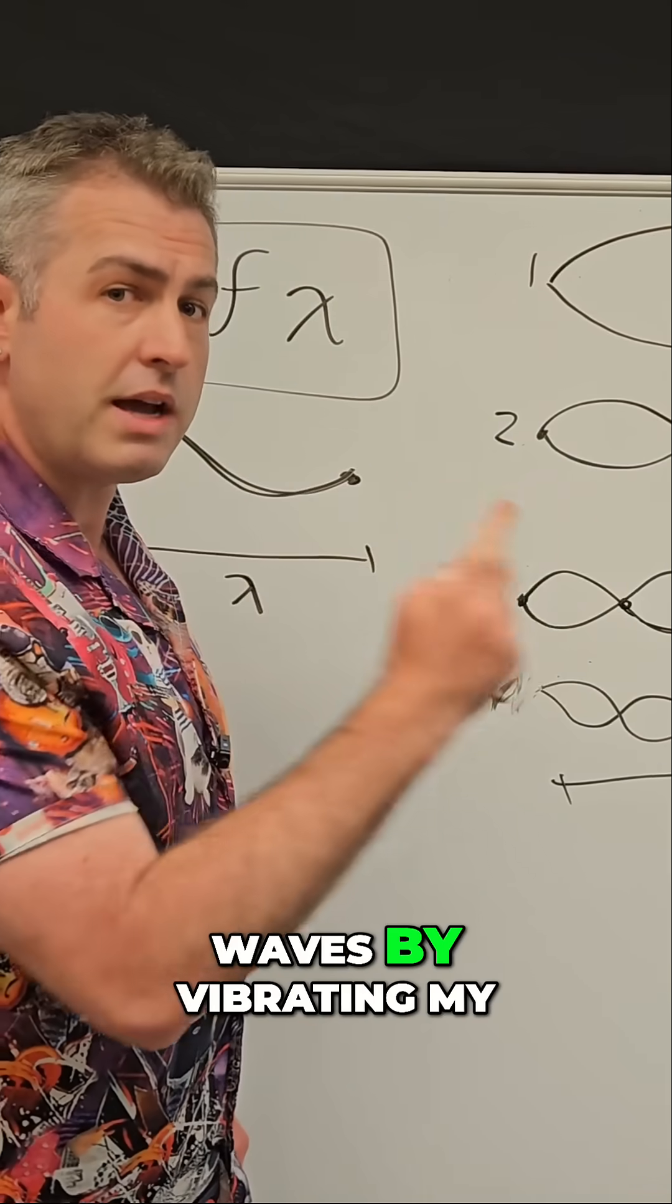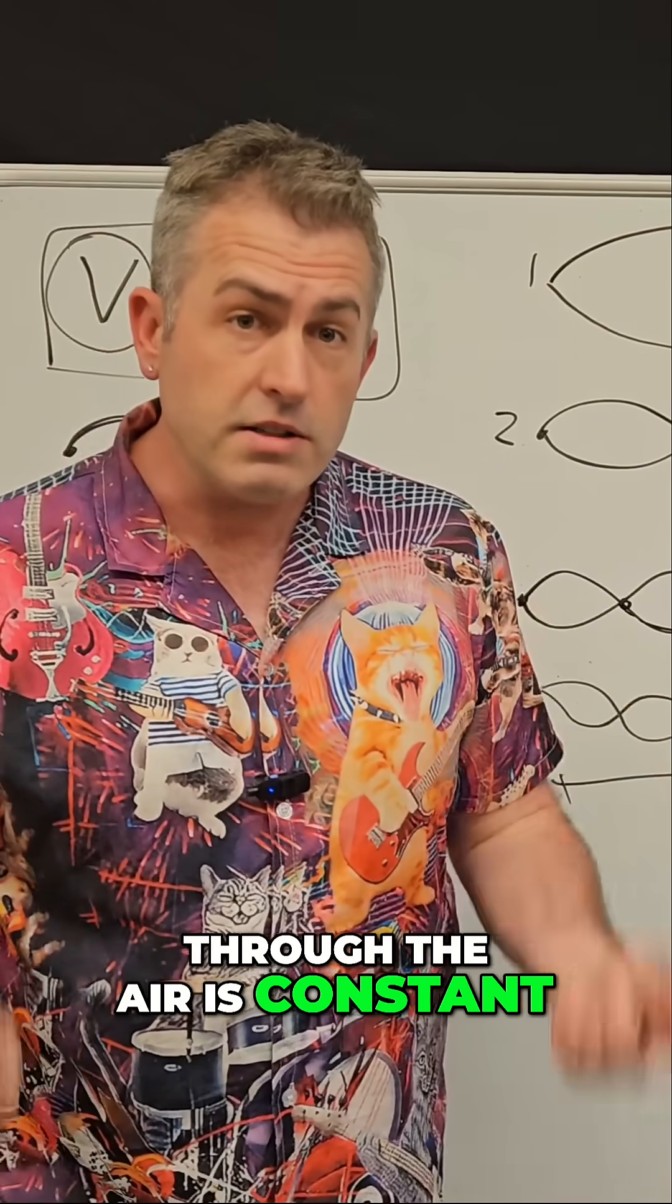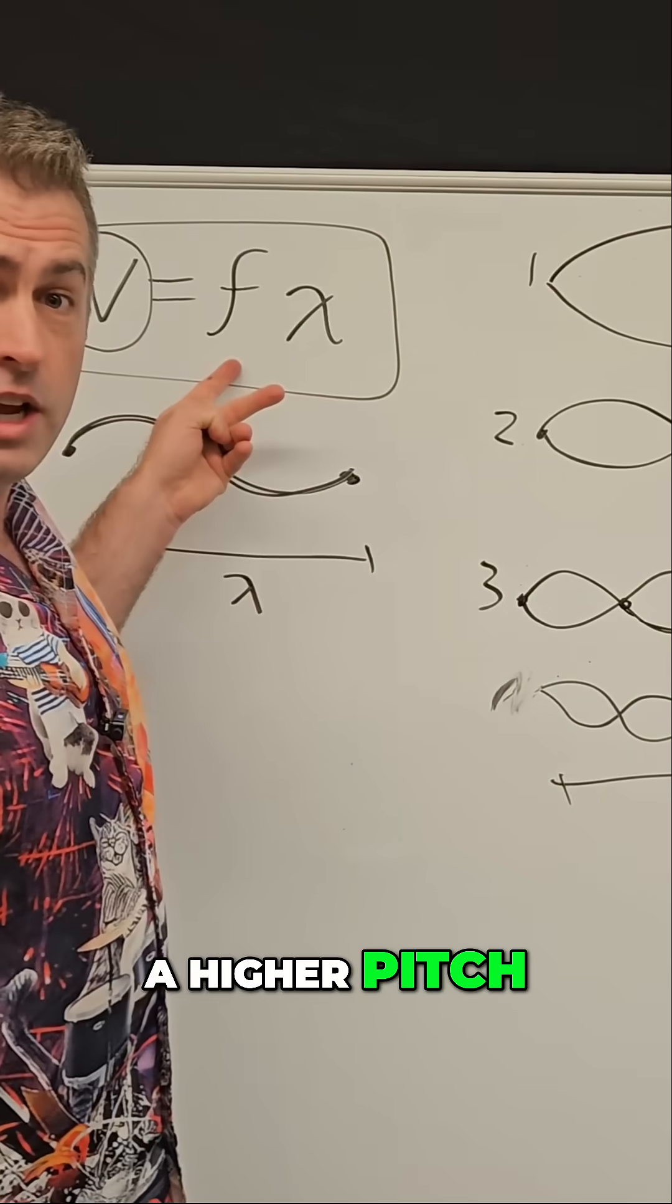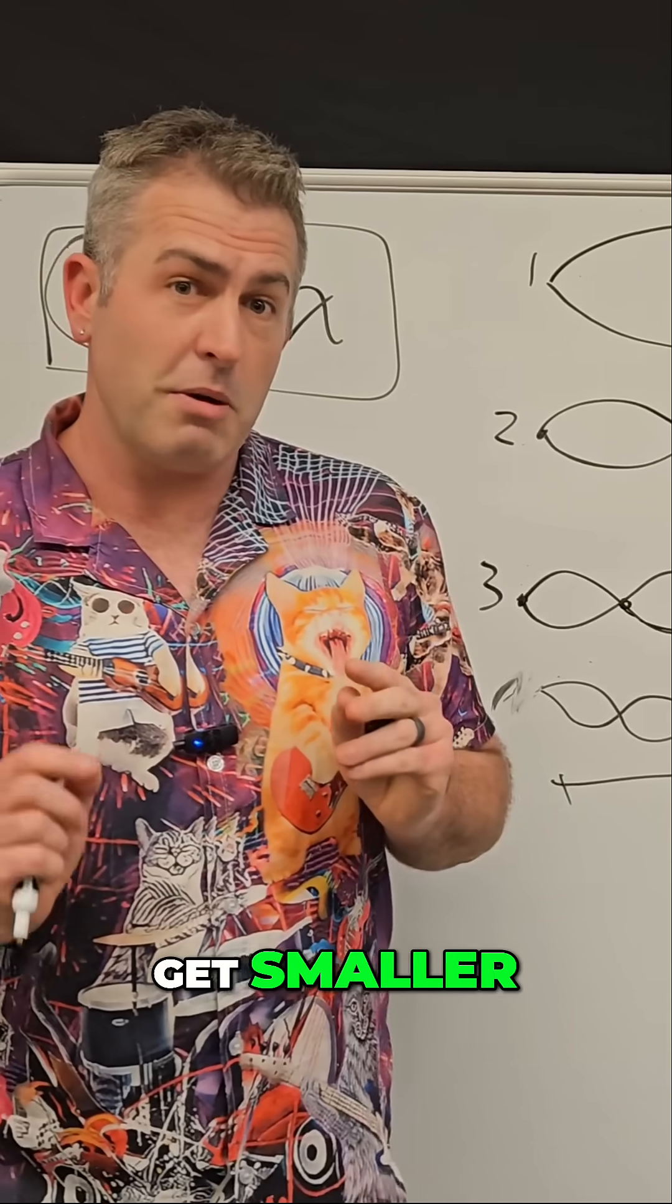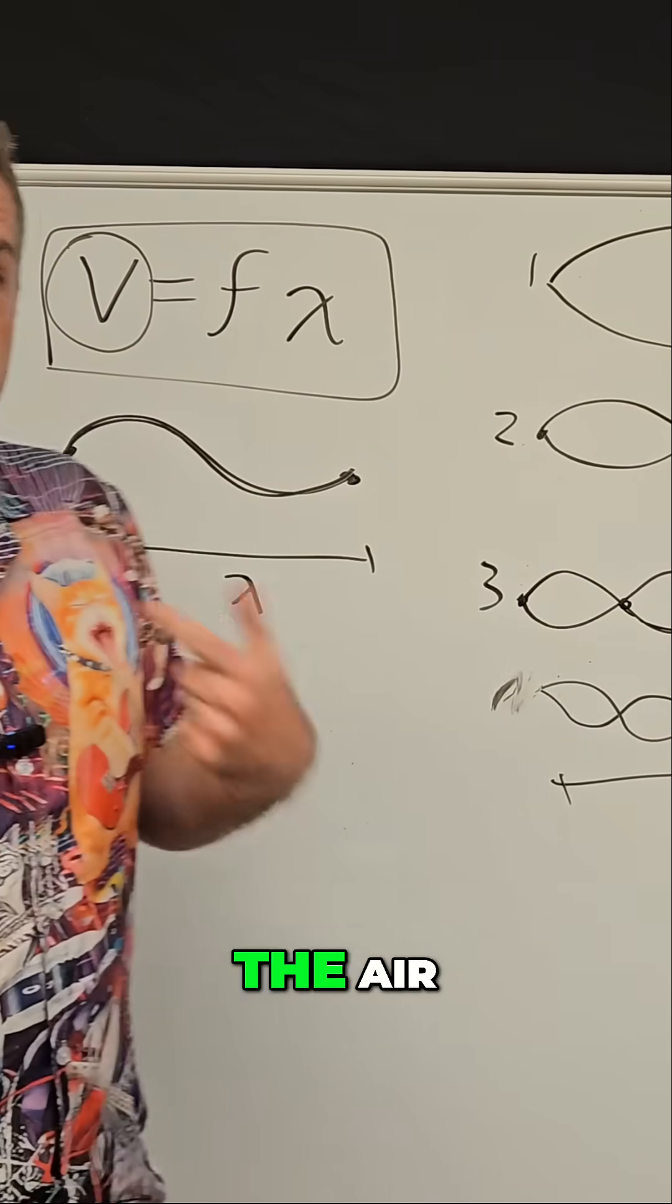If I'm producing sound waves by vibrating my vocal cords, the speed of sound through the air is constant. I can speak at a higher frequency or a higher pitch, and that's just going to cause the wavelengths to get smaller, but it doesn't change the velocity of sound as it travels through the air.